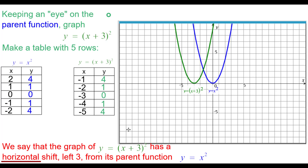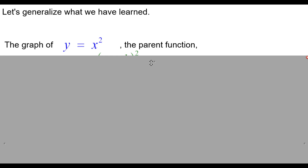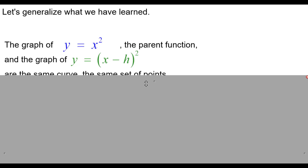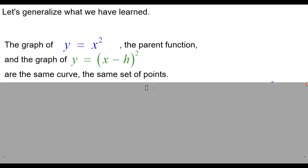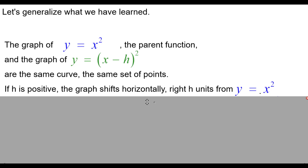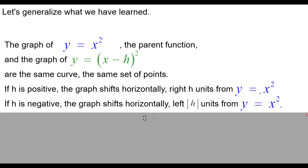That's the terminology we'll be using. To generalize: the graph of y equals x squared and the graph of y equals the quantity of x minus h, squared, are the same curve — the same set of points. If h is positive, the graph shifts horizontally to the right h units. If h is negative, written as x plus some number, the graph shifts horizontally to the left the absolute value of that number of units.